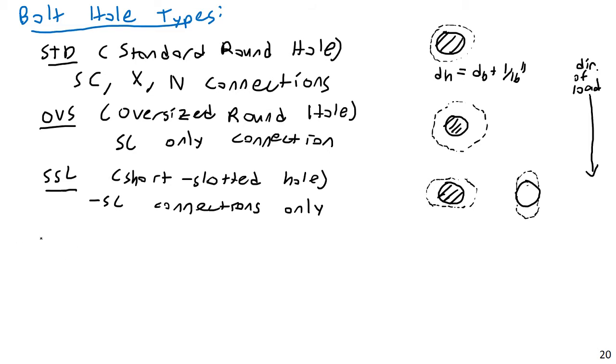Then we have LSLT. This would be a long slotted hole traverse. Again, keep in mind the direction of loading is like this. Hole traverse, or transverse. I'll say traverse. And this is allowed for pretty much everything. This is SC, X, and N connections.